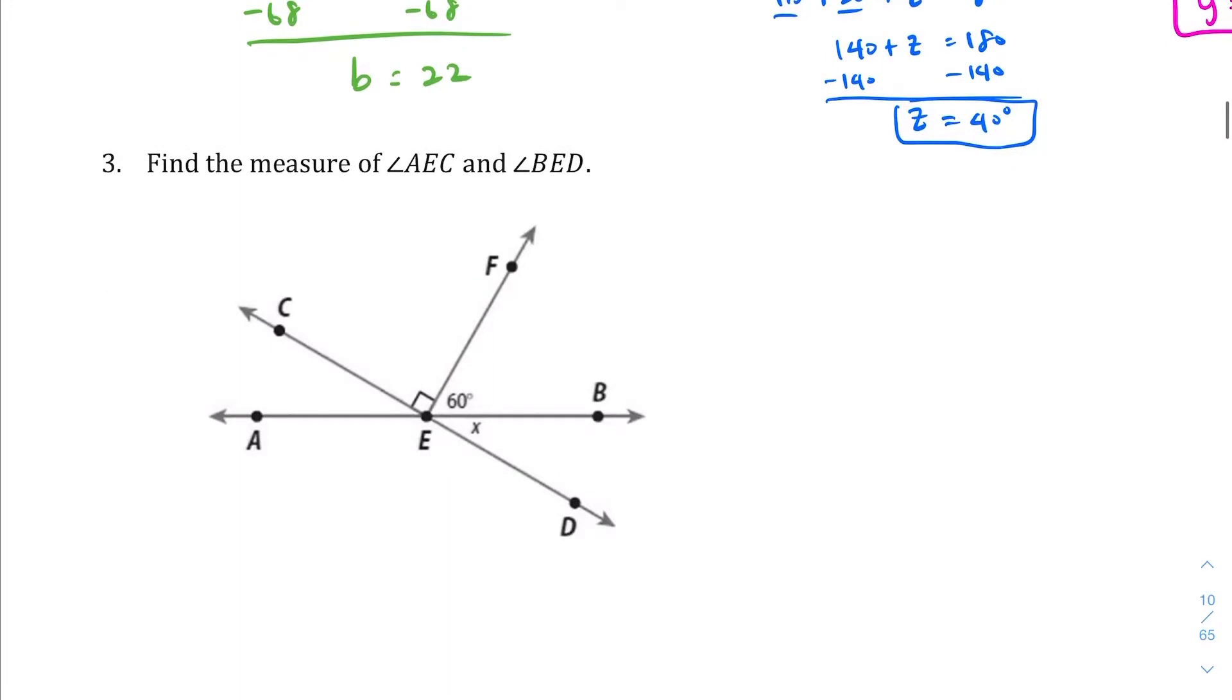Question three. Find the measure of angle AEC and angle BED. AEC is right here. BED is right here. Look at this. They are vertical angles. They are congruent. So if you find one, you found the other. Let's go ahead and solve for x. Here, I can see supplementary angles here. 90 + 60 + x are going to equal 180. So that's my equation.